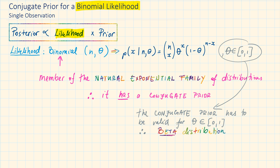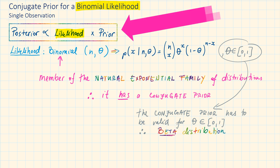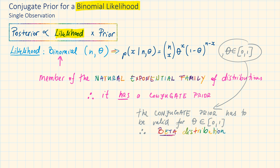If we choose the beta distribution as the conjugate prior for a binomial distribution, and we multiply the two distributions together, the result will have to be proportional to another beta distribution. If this is the case, then indeed the beta distribution is a conjugate prior for the likelihood.